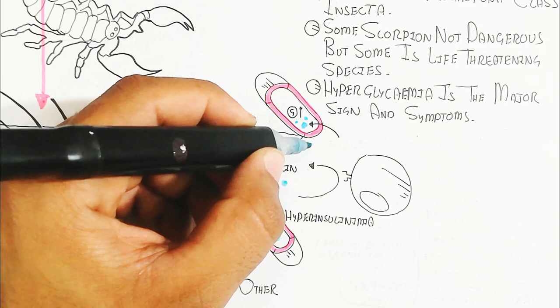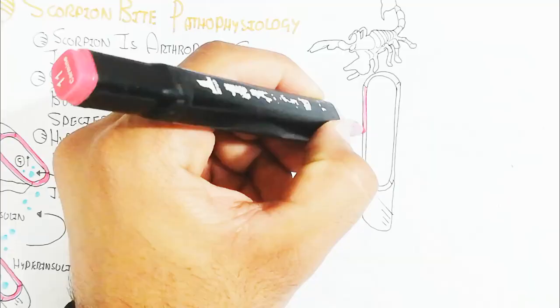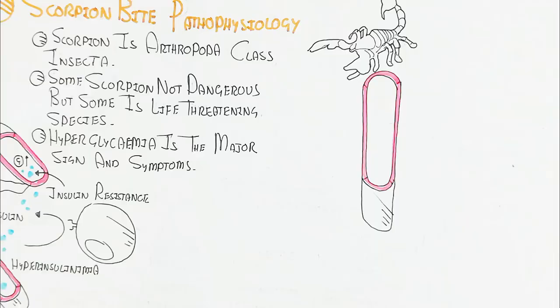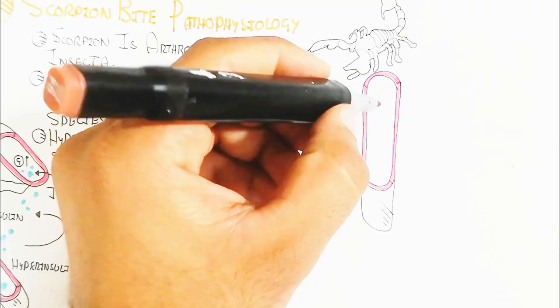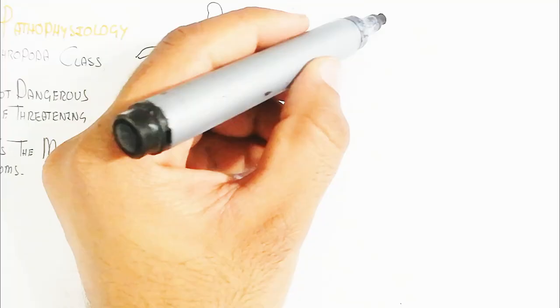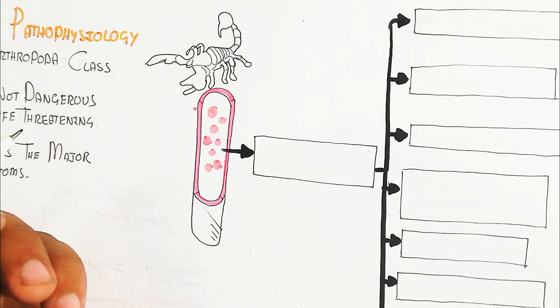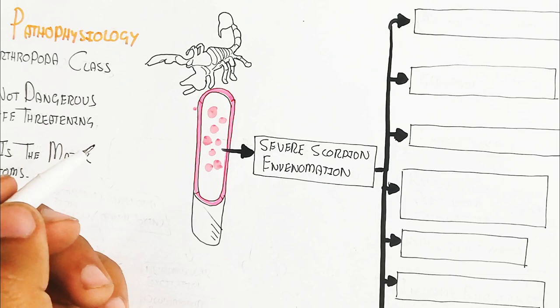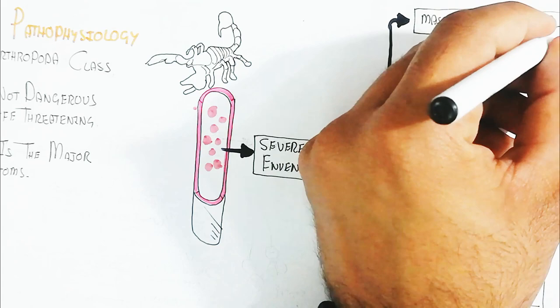Insulin resistance leads to a rise in glucose level, known as hyperglycemia. Glucagon will also rise, causing more glucose to rise in the blood. The insulin insensitivity leads to further hyperglycemia.